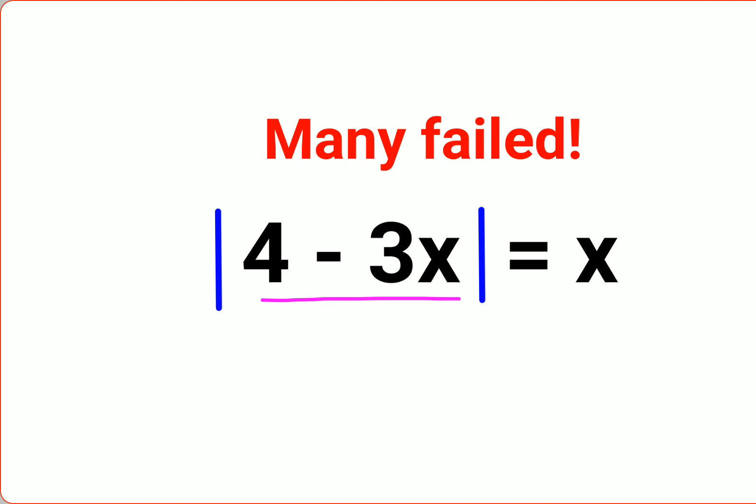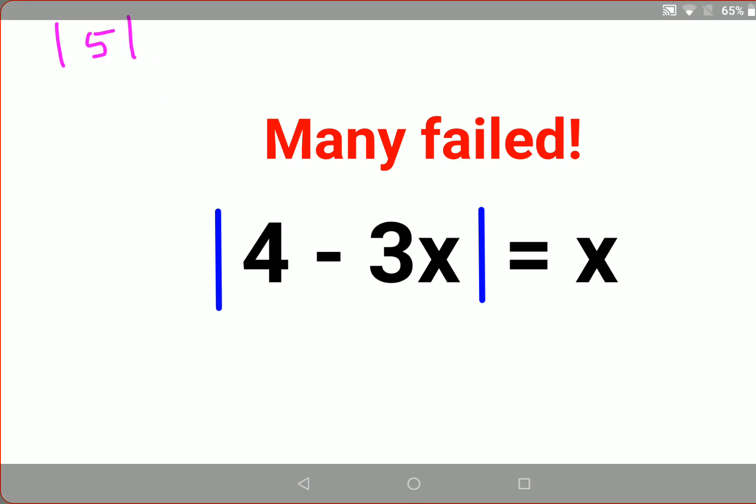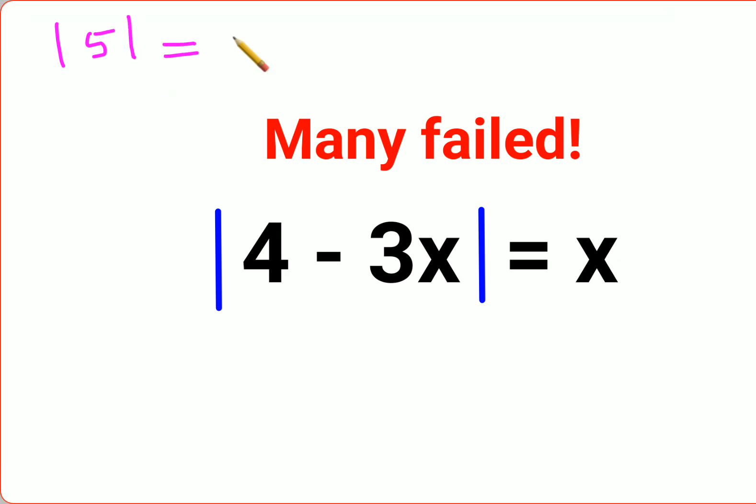Now first, a very important thing. If you have, let's say, mod of 5 equals to a, we want to remove the mod. In order to find the value of a, first we need to remove the mod, and that can be written as 5 equals to plus minus a.